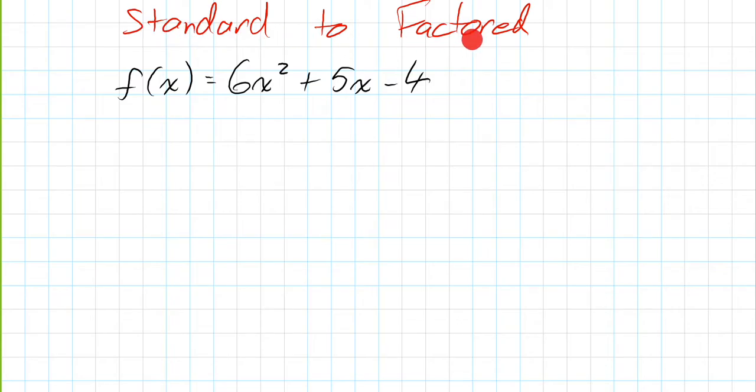We're going to go from standard to factored form, so like we talked about in the last one, the parent function for standard form looks like this: ax squared plus bx plus c. Now technically our c is a negative 4 here, but that's fine.